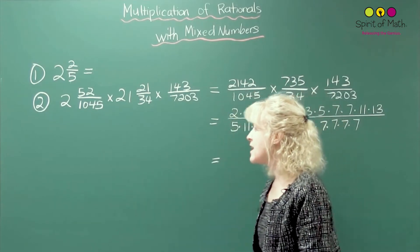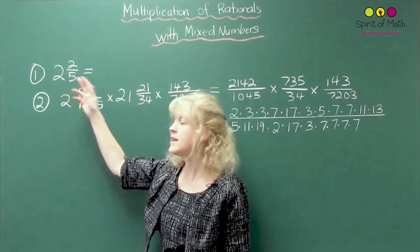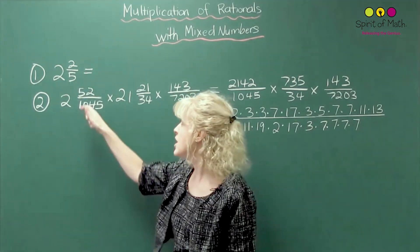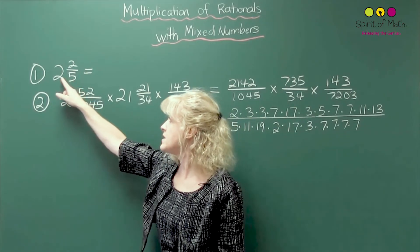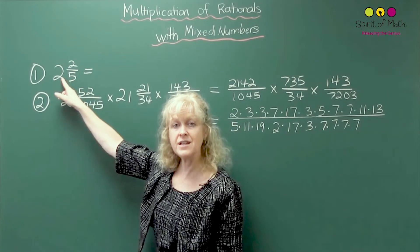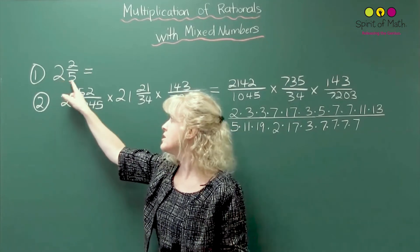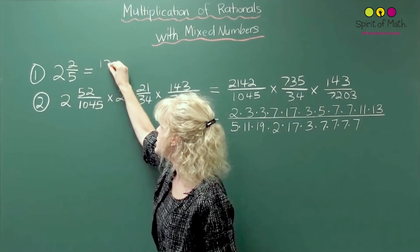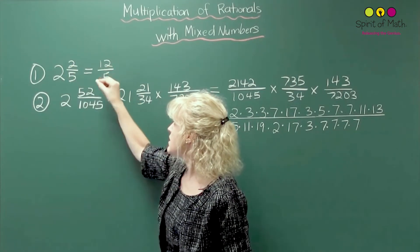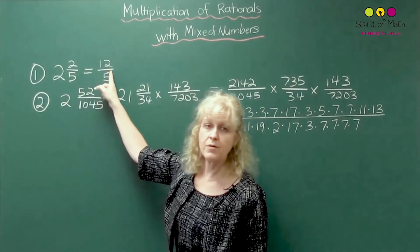That extra step involves taking this mixed rational and making it into an improper fraction. So the way to do that is to take the denominator 5 times 2, which is 10. That makes 10 parts in two wholes. So you've got 10 plus the extra 2 left over here, which is 12. And that's how you make it from mixed to improper form.